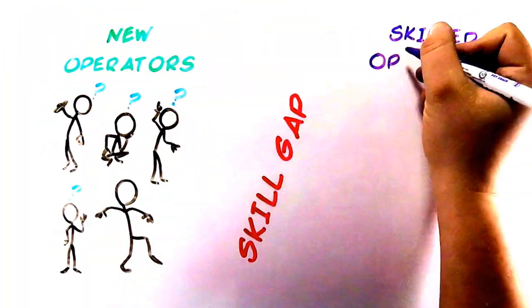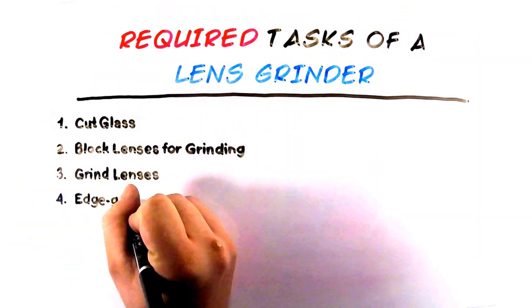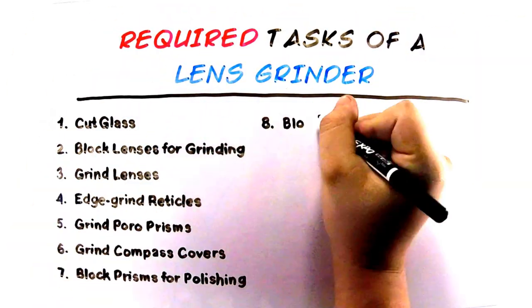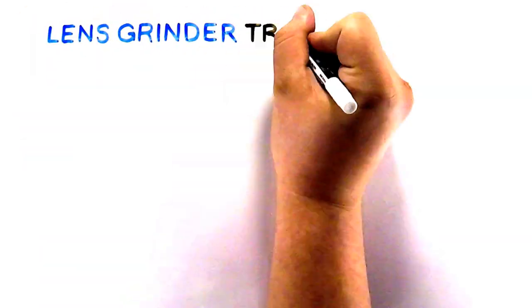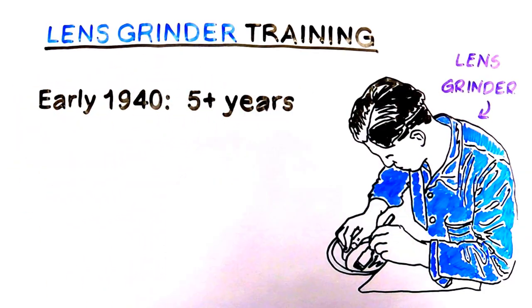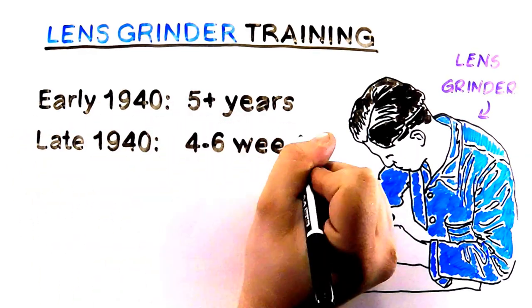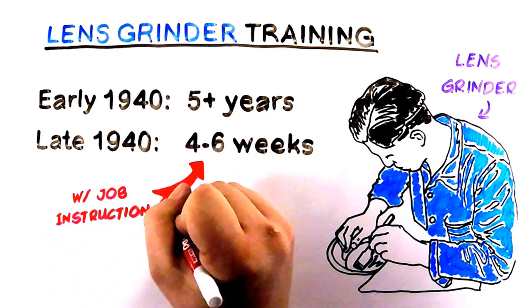Dooley and Dietz began with closing the skill gap. Using Charles R. Allen's training method as a base, a test was done on the lens grinding industry to help improve training time. Lens grinding is a complicated process. In the early 1940s, it would take five years to train the average person the art and science of lens grinding. By the end of 1940, that time was reduced to four to six weeks. Job instruction was born.